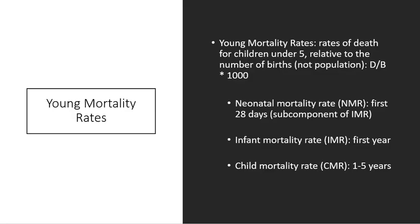There is also a specific set of measures for young mortality rates, because these are perhaps the most puzzling and are of great interest to researchers to mitigate and solve. Young mortality rates have to do with deaths of children under the age of five, and the overall young mortality rate is the number of under-five deaths relative to population — a particular type of specific death rate. The neonatal mortality rate covers the first 28 days of life, the infant mortality rate covers up to the first year, and child mortality follows through the end of the young mortality period, ages one through five.